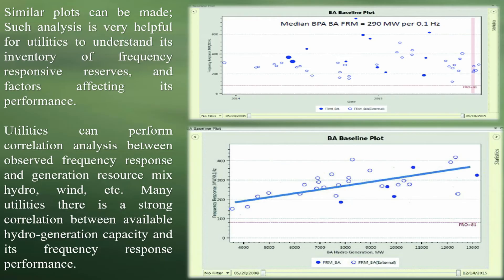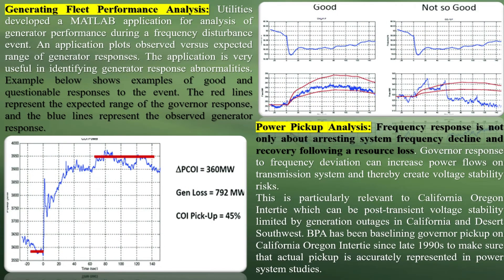Data extract: several applications are used to extract data from OSI Soft PI servers. One advantage of OSI Soft PI architecture is that an application can simultaneously access both SCADA and PMU PI historians. Utilities use high-resolution measurements of bus frequencies, voltages, phasor angles, intertie flows, and generation from PMU historian, and AGC quantities from SCADA historian. SCADA data are time-synchronized at the control center, so there is a time lag between PMU and SCADA measurements — at least SCADA's scan rate of 2 seconds in our experience. The data extract application can time-shift SCADA quantities for better alignment with synchrophasor measurements.